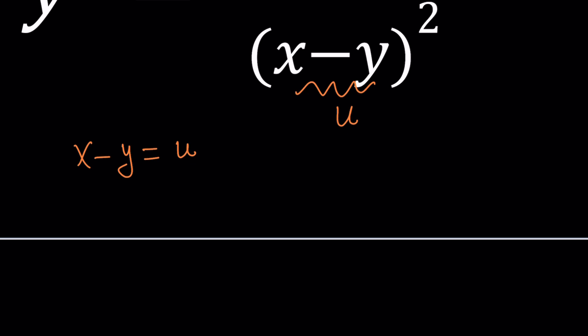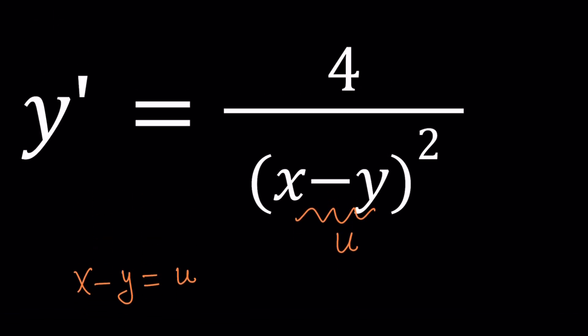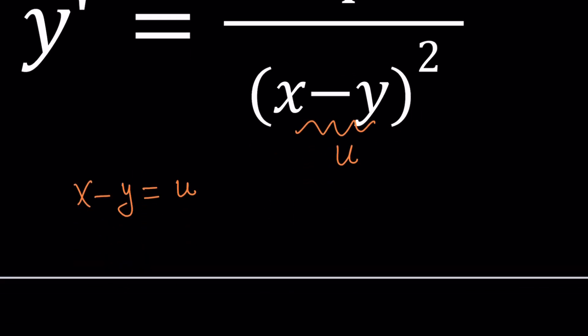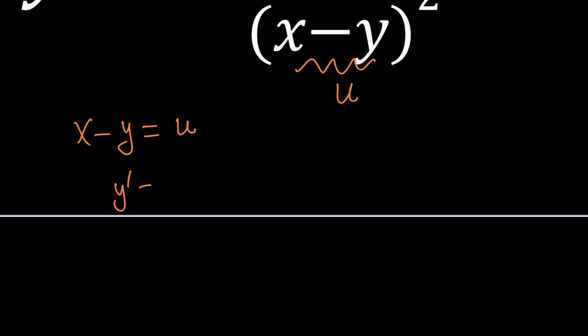Since u is a function of x, we can differentiate both sides. Why do we need to do that? Because in our equation we're going to replace x minus y with u, but that gives us y prime equals 4 over u squared. You don't really know how to associate y prime and u squared because they are different variables, so you need to find a way to make them work together. So here's what we're going to do — we're going to differentiate everything, both sides. The derivative of x with respect to x is just dx over dx, which equals 1.